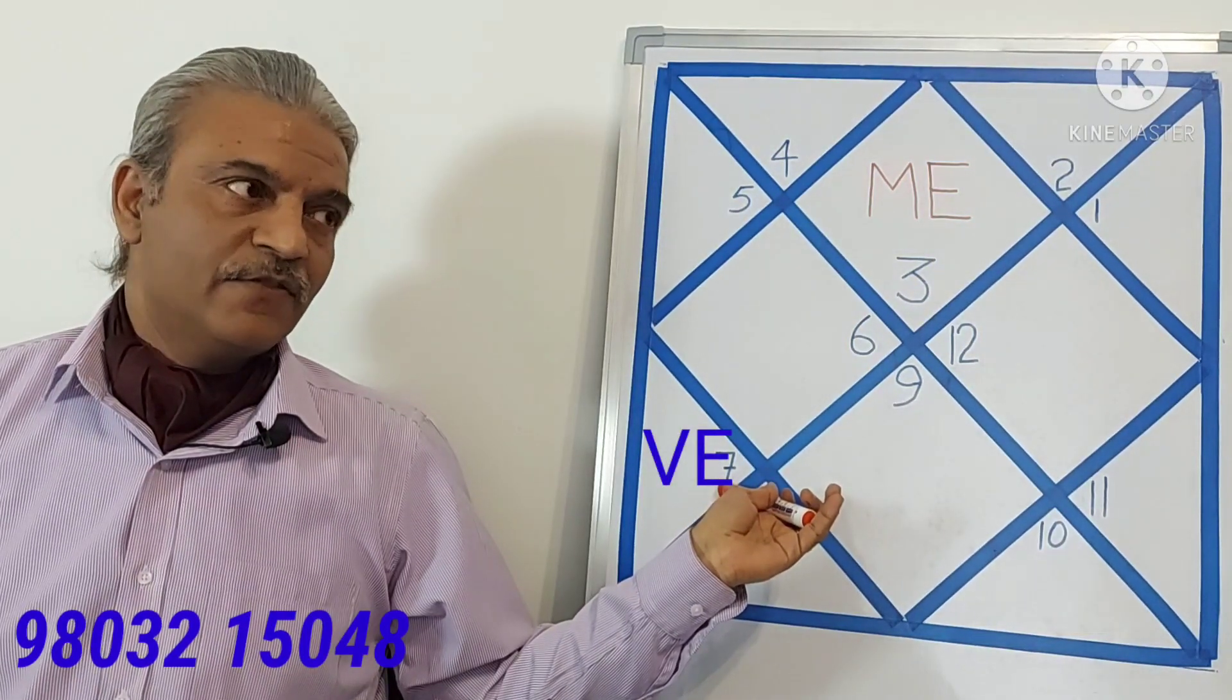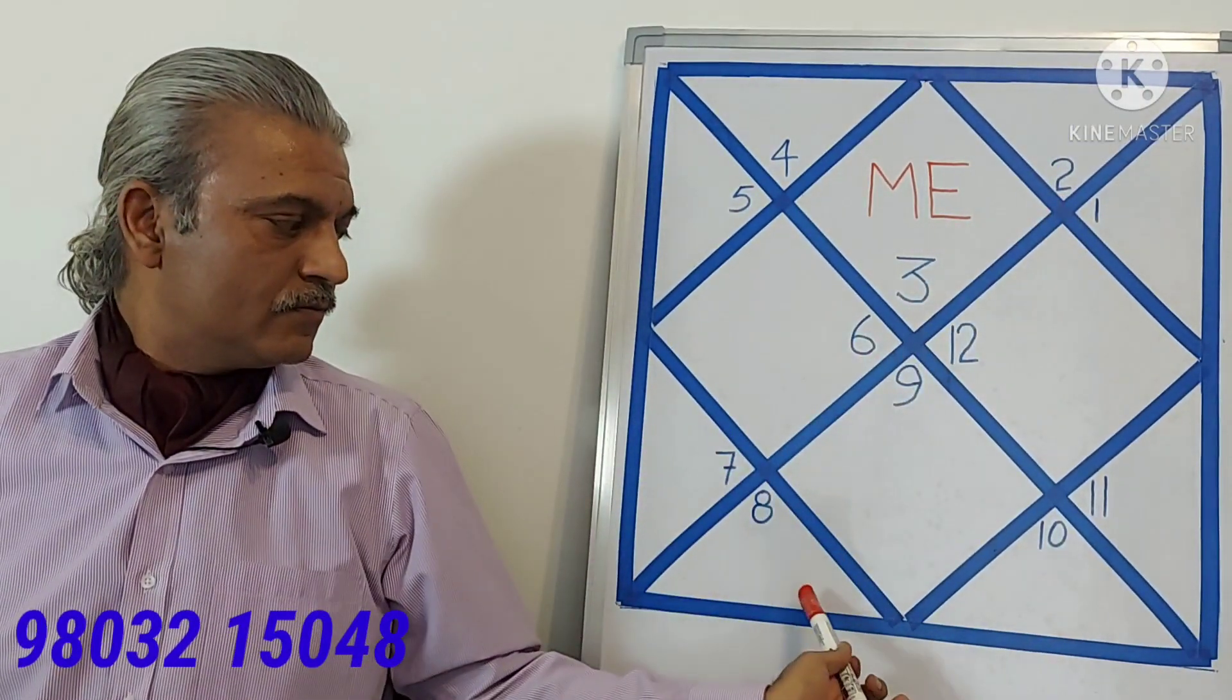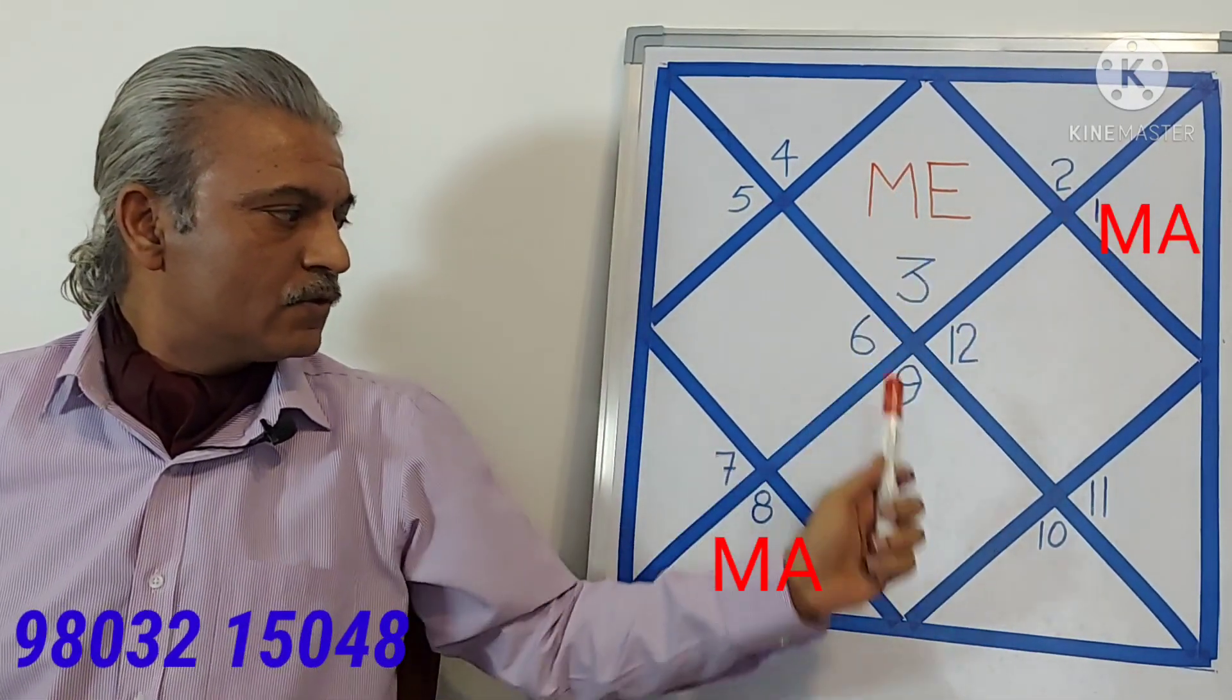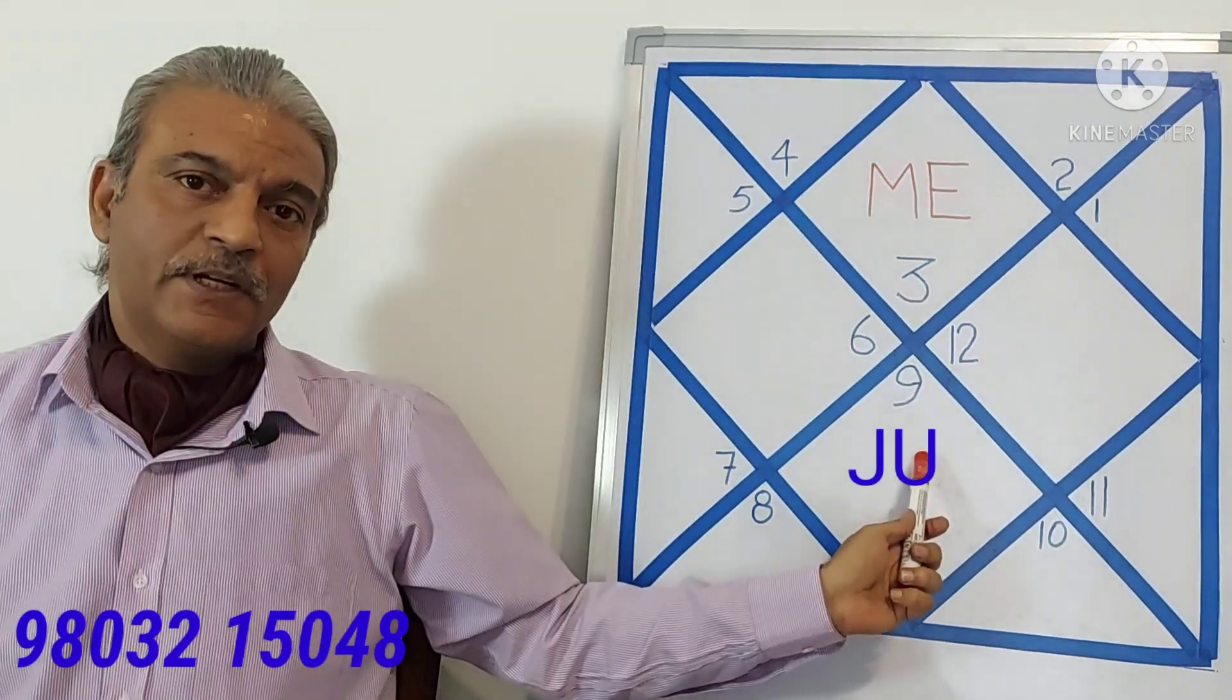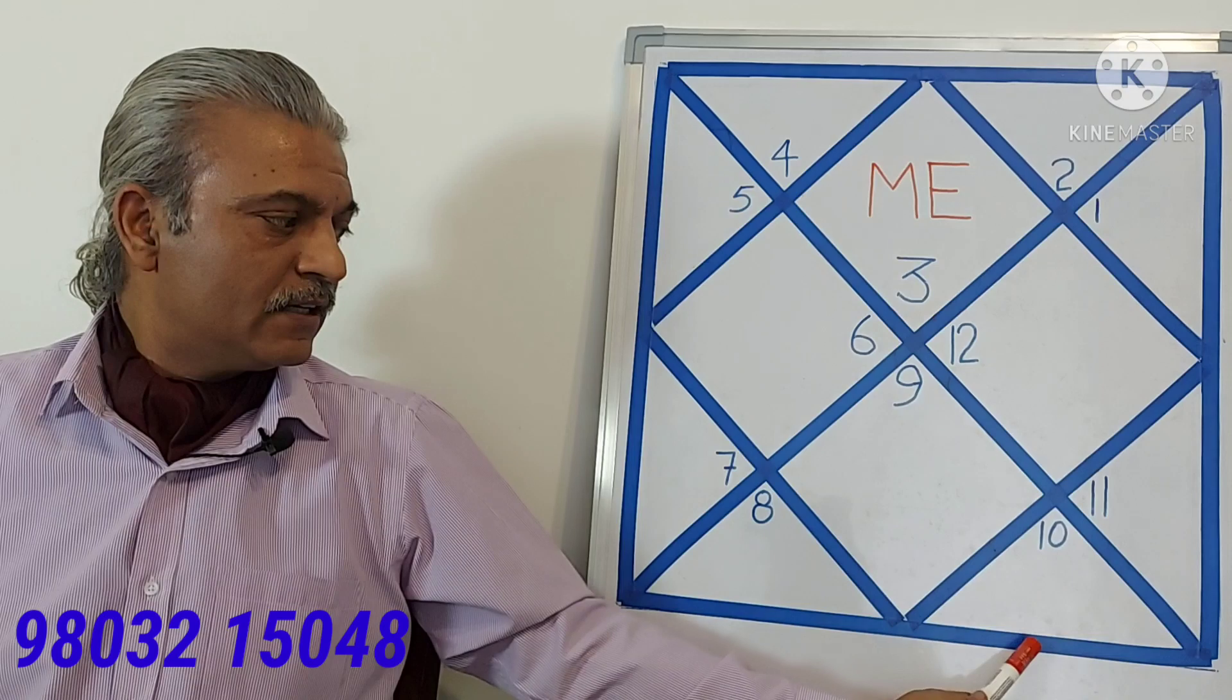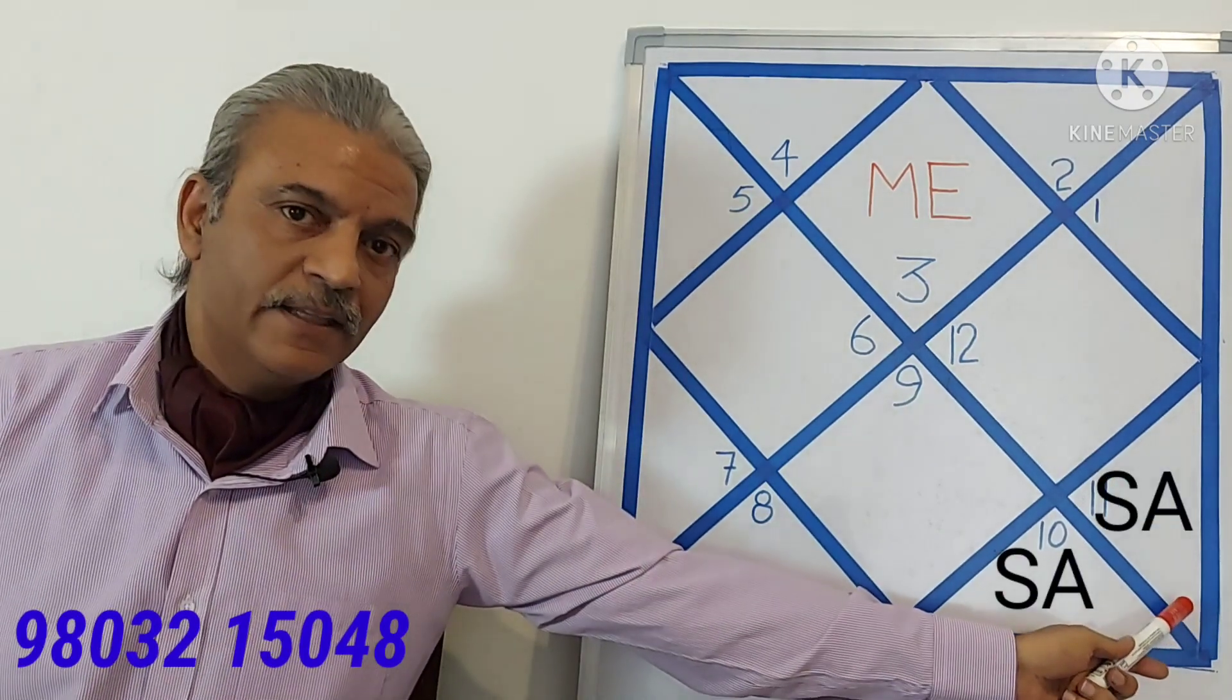Venus gets the fifth house and the twelfth house. Mars gets the sixth house and the eleventh house. Jupiter gets the seventh house and the tenth house, and Saturn gets the eighth house and the ninth house.